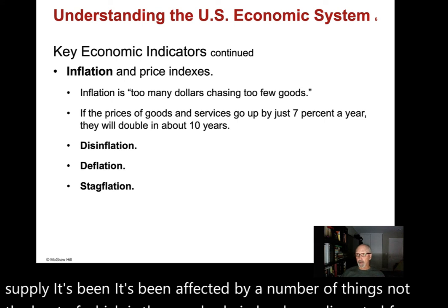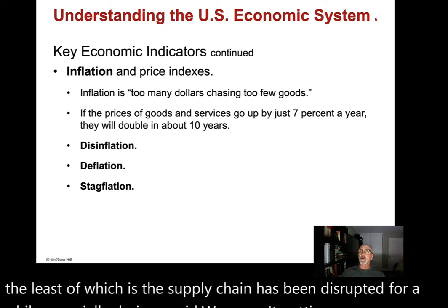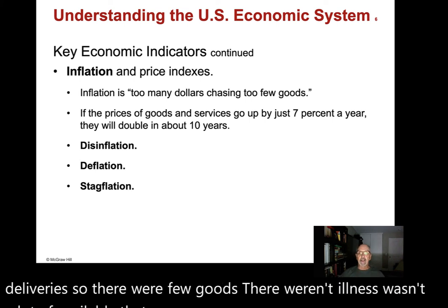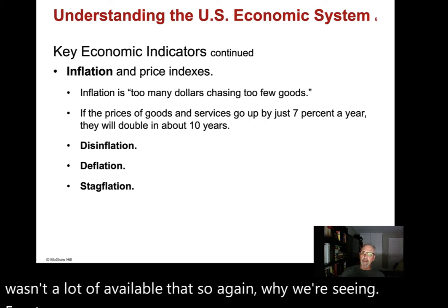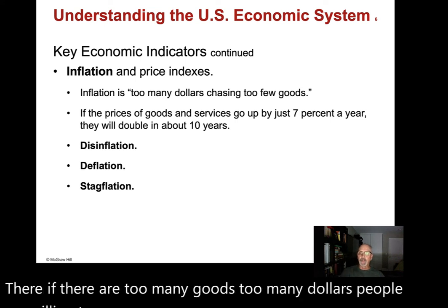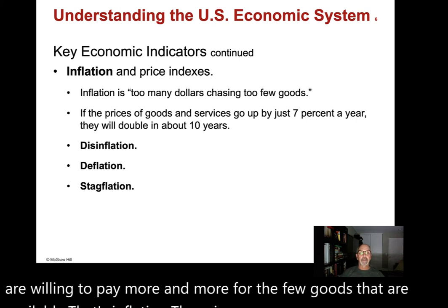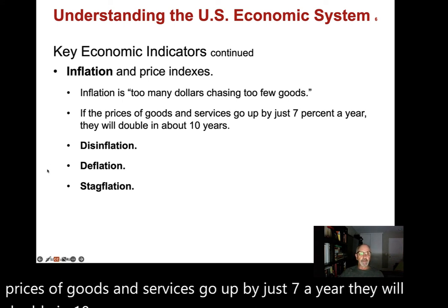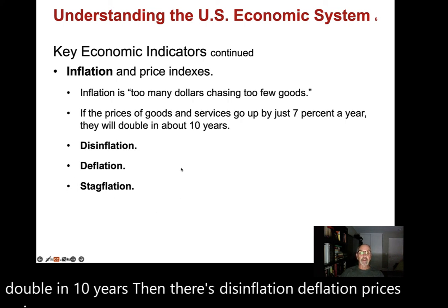Supply chain disruptions during COVID meant we weren't getting as many deliveries, so there were few goods and empty shelves. When there are too many dollars chasing too few goods, people are willing to pay more — that's inflation, and prices just keep going up. If prices go up by just 7% a year, they will double in 10 years. There's also disinflation, deflation — prices going down — and stagflation.